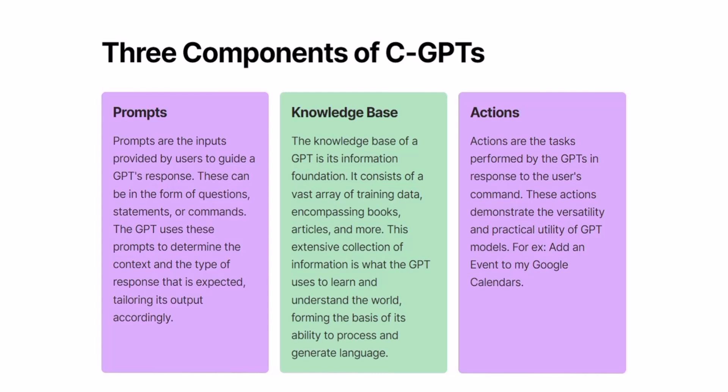Next up are knowledge bases. These are basically the vast collection of information that the GPT uses. You can think of it as the brain of the GPT itself — using its brain, it gives the answers. Previously, ChatGPT used to give answers from the information it already had. But now in custom GPT, we can add our own PDFs and our own docs, which it will be trained on and use to give answers. For example, if we have a custom GPT trained to answer student questions about a particular chapter, we can upload the PDF of that chapter, and students can chat with the PDF to get answers.